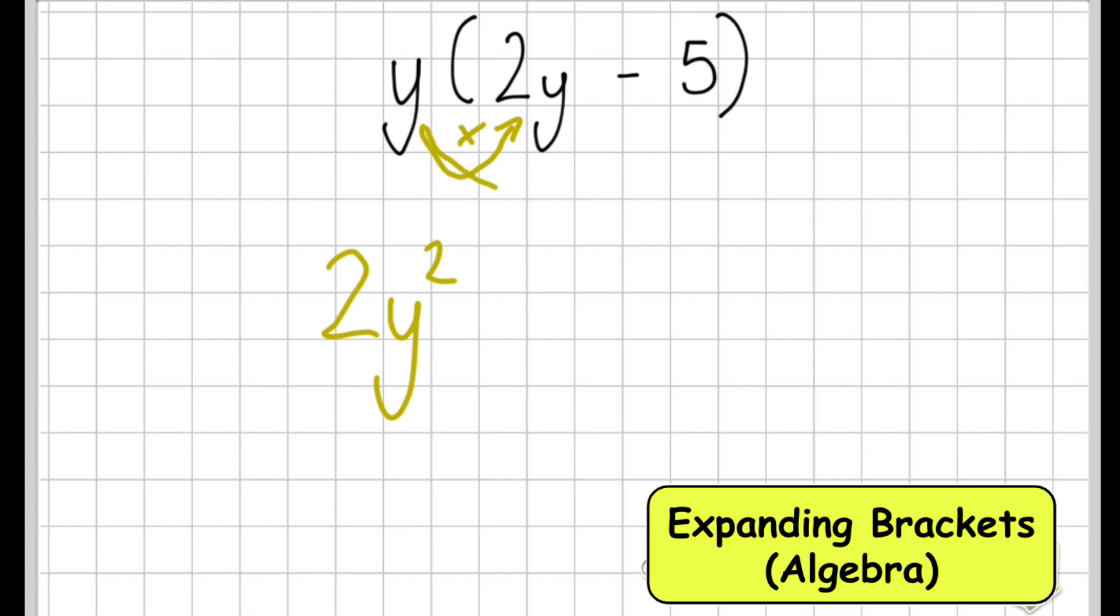Then I've got y multiplied by negative 5. So that will give me take away or negative 5y. And there is the second one that's been expanded. Again dead easy hopefully.